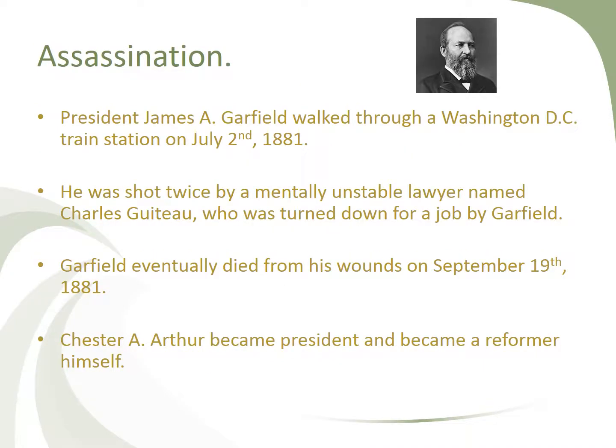As President James A. Garfield walked to a Washington, D.C. train station on July 2nd, 1881 — just a couple of months after he was sworn in — he was shot twice by a mentally unstable lawyer named Charles Guiteau, who had been turned down for a job by Garfield. Eventually Garfield died from his wounds a couple months later, on September 19th, 1881, becoming the second president to be assassinated, Abraham Lincoln being the first. Chester A. Arthur then became president, and even though he had been put on the ticket to stop the reforms, he became a reformer himself.